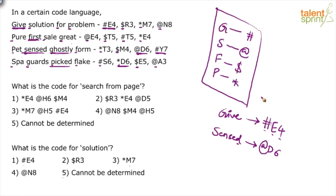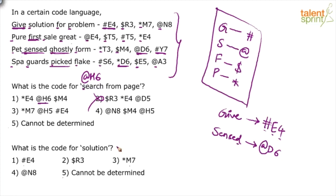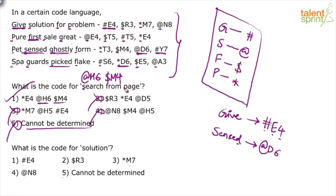So, what is the code for 'search from page'? For 'search': S is coded as @, last letter is H, and number of letters is 6. So the code is @H6. Looking at the options, @H6 is available in the first option only — second option has @H5, third option is wrong, fourth option is wrong, and fifth 'cannot be determined' is ruled out because the answer can be determined. Hence the first option is correct. Quickly verifying: 'from' — F is $, last letter N, 4 letters → $N4. 'Page' — P is *, last letter E, 4 letters → *E4. First option is confirmed.